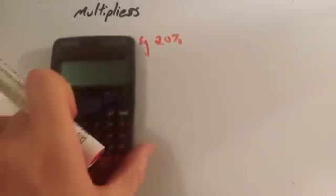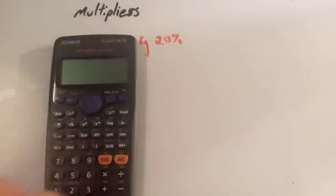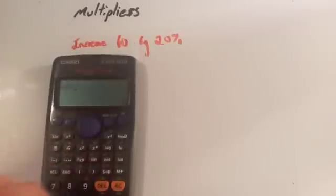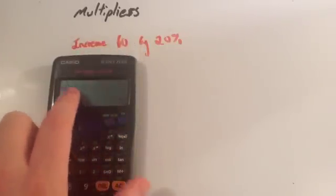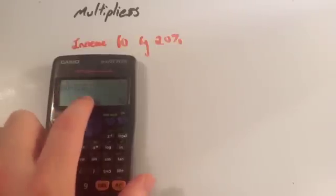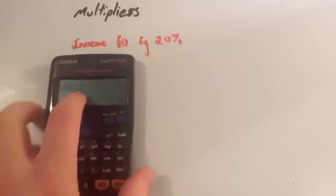But also watch this. If I do 60 multiplied by 1.2, I also get 72. This 1.2 is what we call a multiplier. And I'm going to teach you how to use these multipliers now.